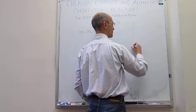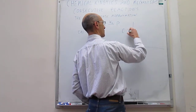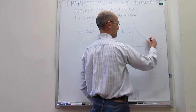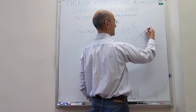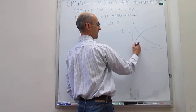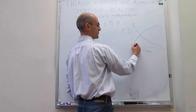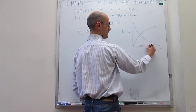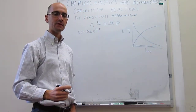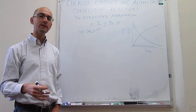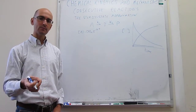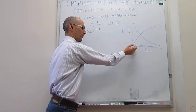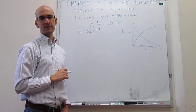However, it's more often the case that when you have an intermediate, that intermediate reaches something called steady state. For example, if we plot concentrations as a function of time, the reagent decreases, the product grows, and the intermediate after some induction period reaches a very low concentration that seems to stay constant as a function of time. Many reactions that have intermediates satisfy this approximation.